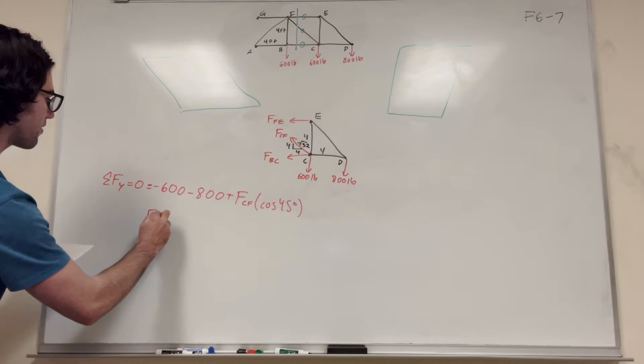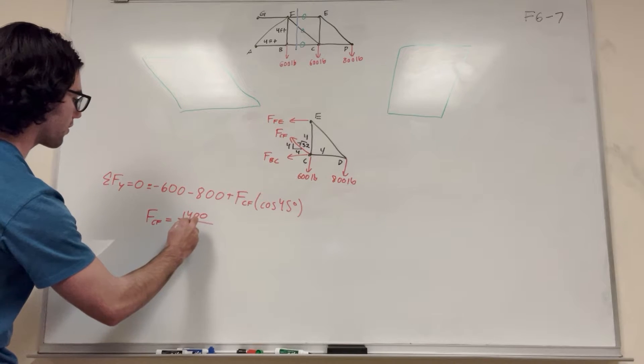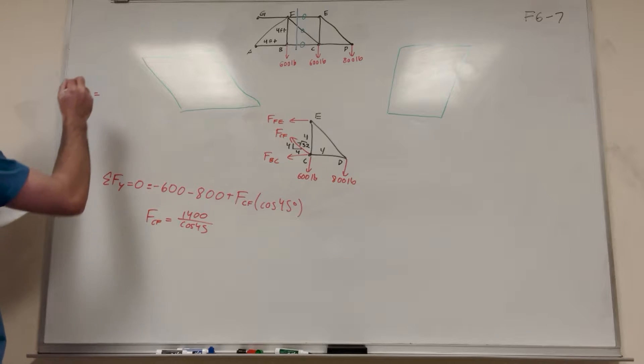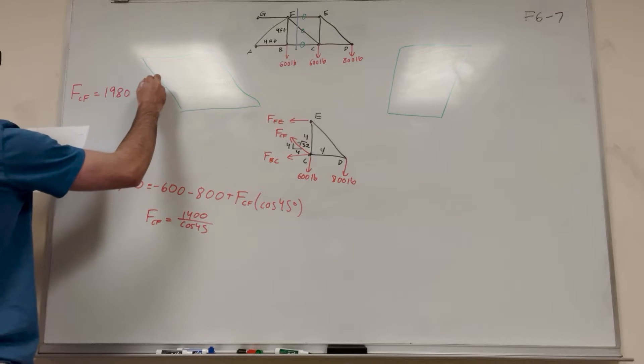Of course we're going to move these two over and then divide by cosine of 45. So it'll look like FCF is equal to 600 plus 1400 over cosine of 45. And then we're going to get FCF is equal to 1980 pounds.